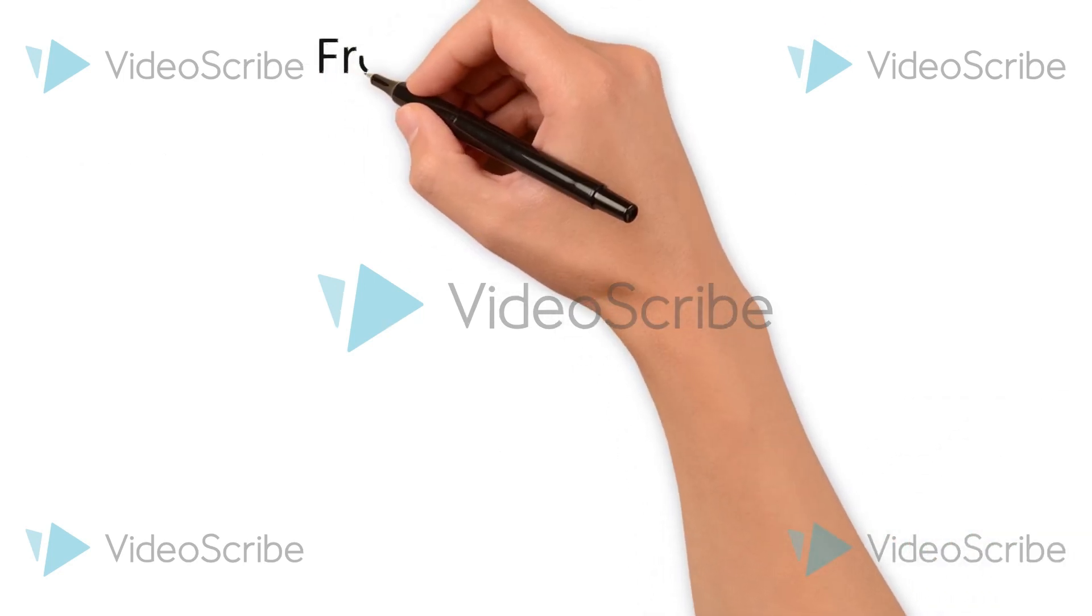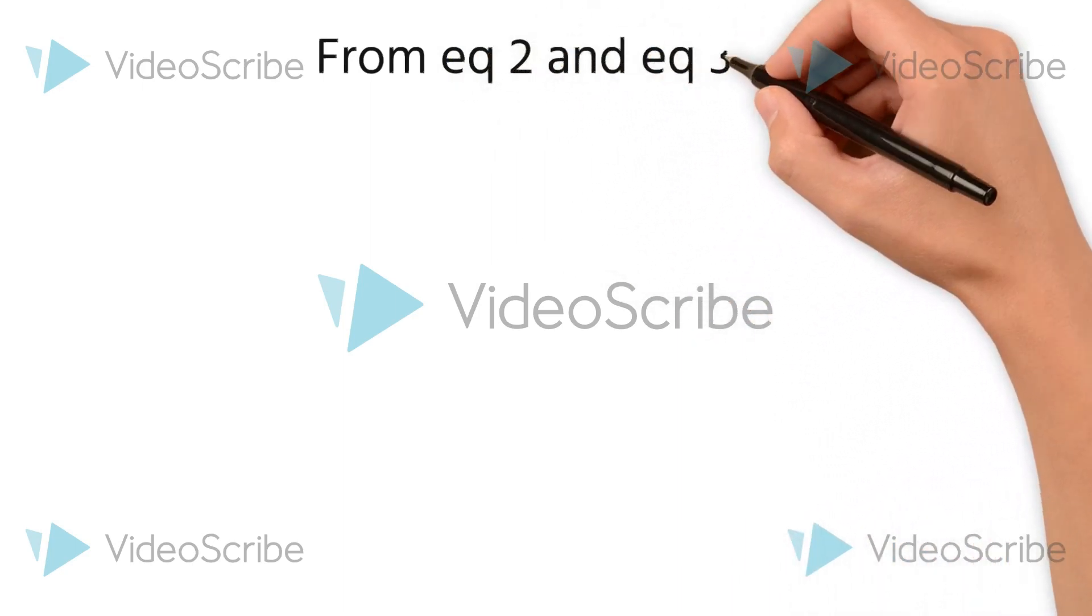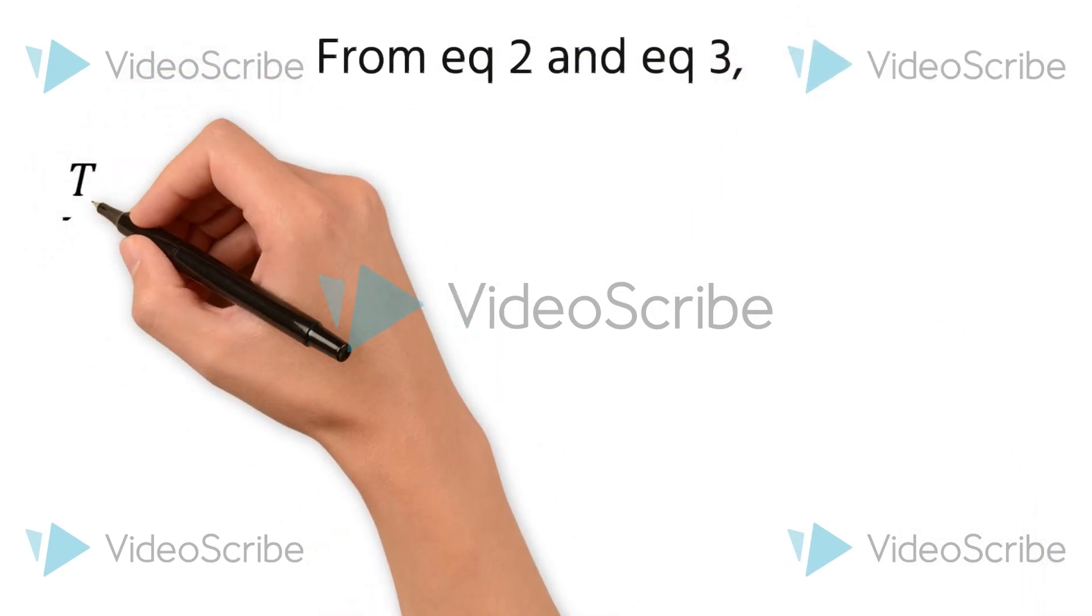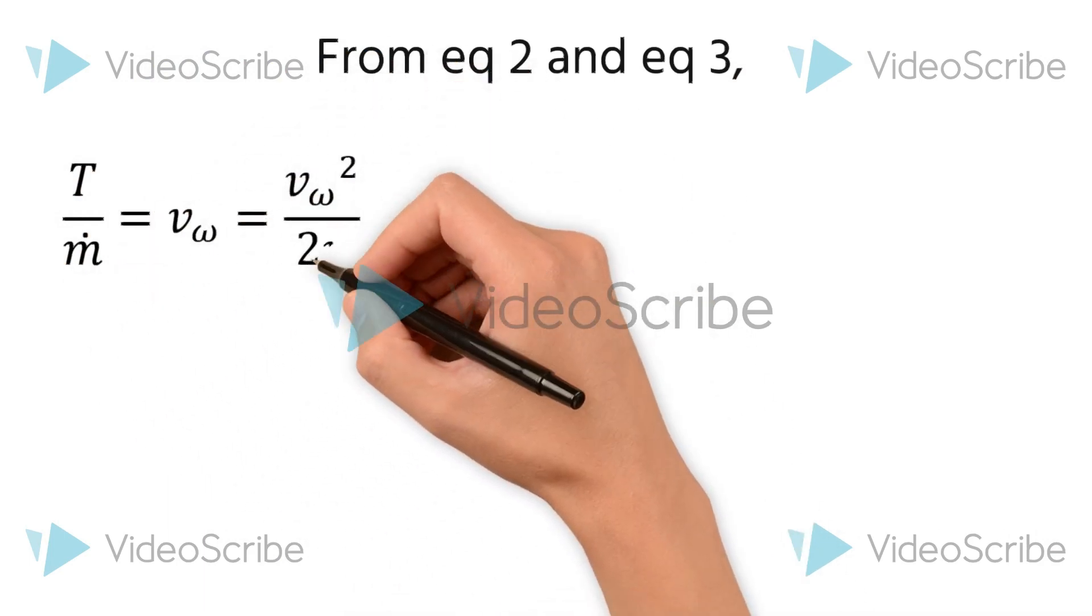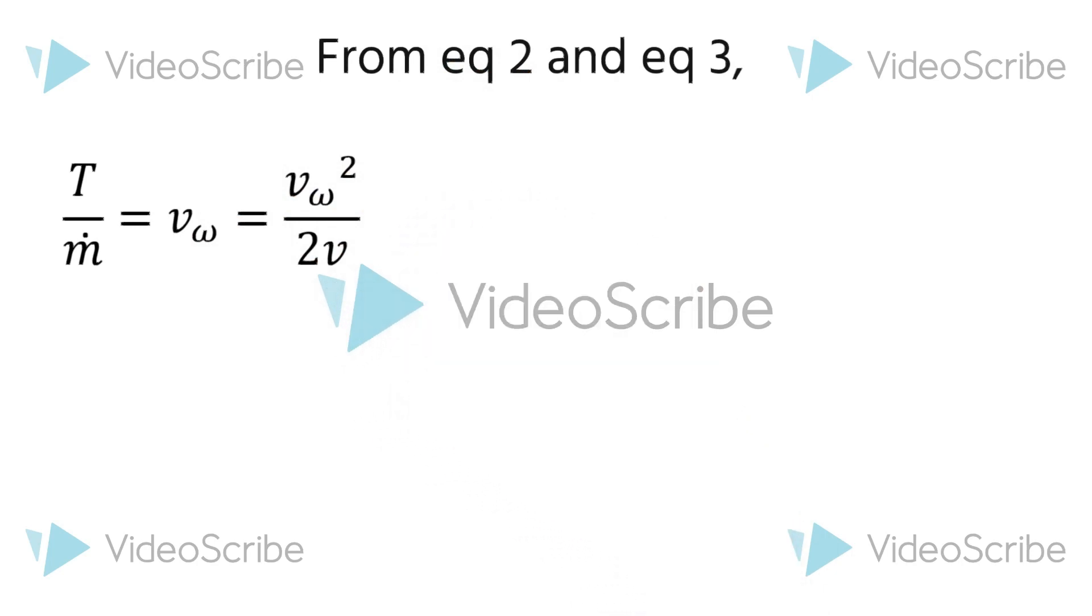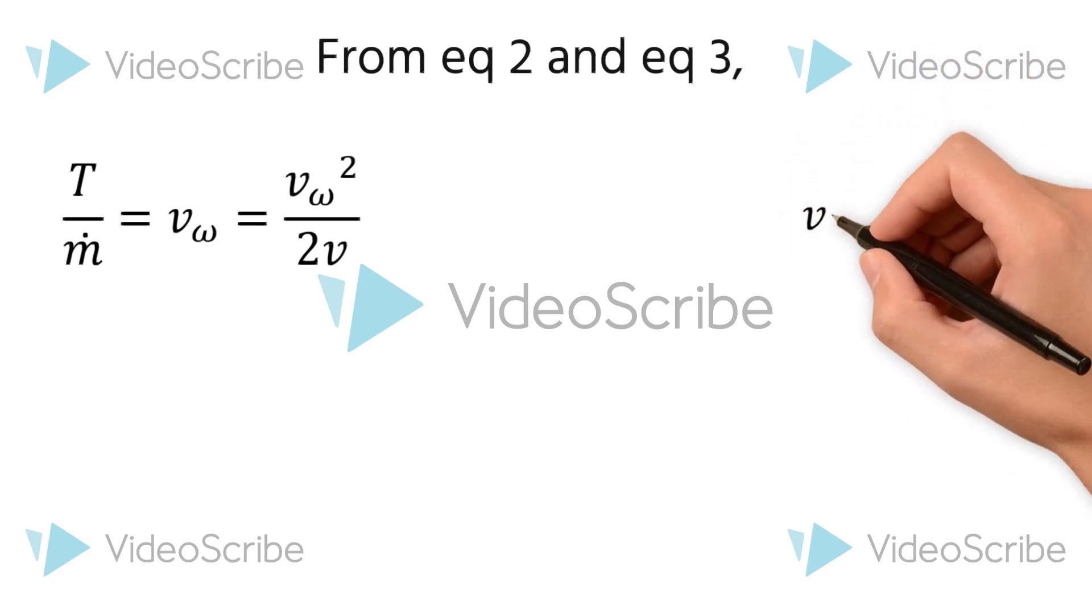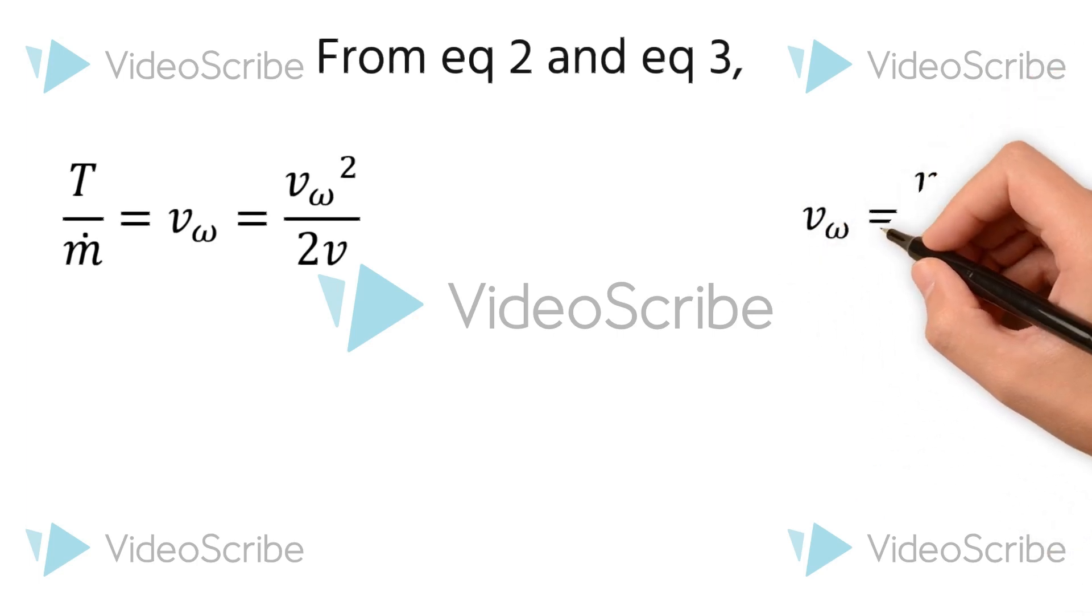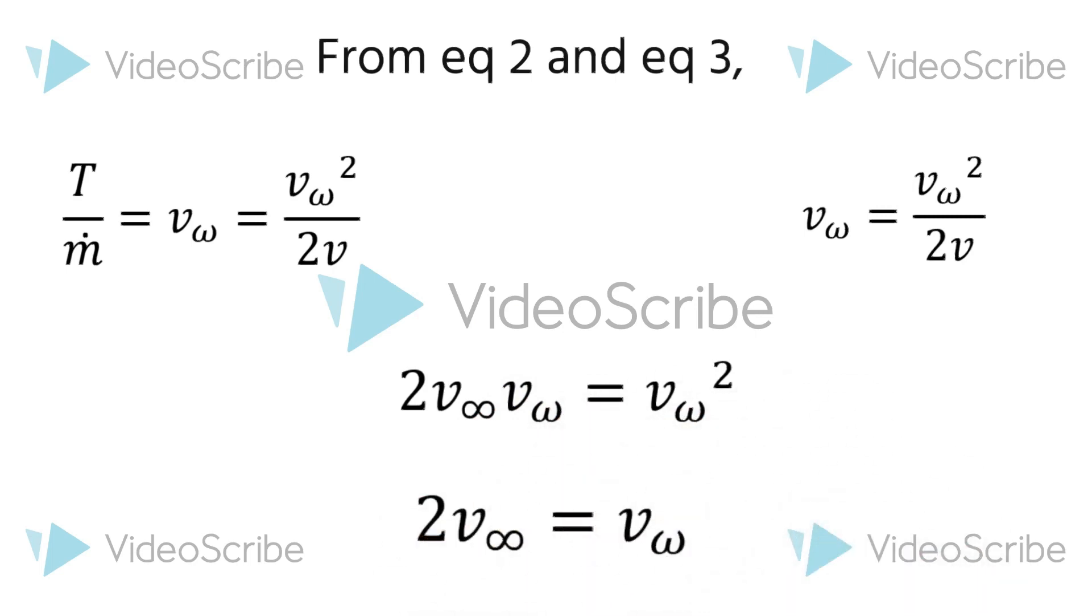Now considering the second and third equations, we can easily convert it into the form of thrust divided by mass flux, which is equal to the wake velocity, which is also equal to the wake velocity squared divided by 2V. Now by neglecting the same terms, we can say that the wake velocity is equal to twice the upstream velocity.